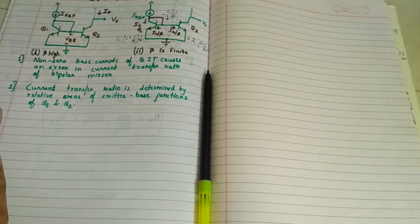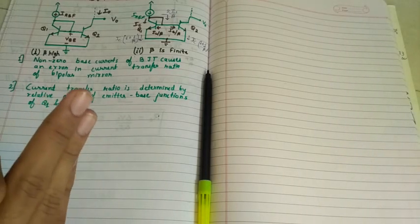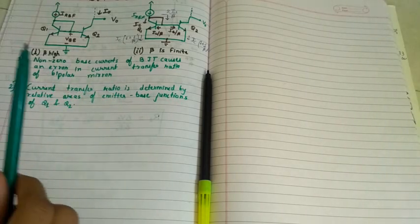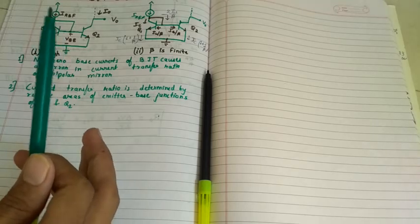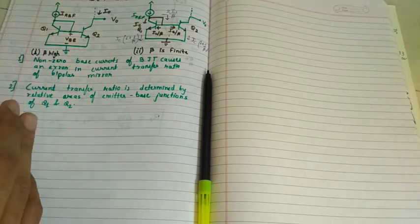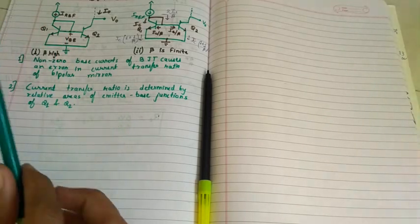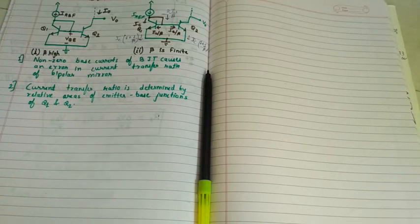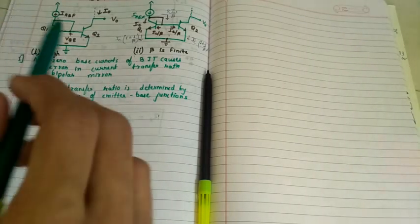In the first case, beta is very high, and in the second case, beta is finite. So in the first case, we will consider beta as infinite. But before that, let us note the difference between MOS and BJT, especially in case of current mirror circuits.